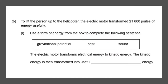Next question. To lift the person to the helicopter, the electric motor transformed 21,600 joules of energy usefully. Use a form of energy from the box to complete the following sentence. The electric motor transfers electrical energy to kinetic energy. The kinetic energy is then transferred into useful something energy. The helicopter is lifting the person up, so the person is going off the ground and is no longer on the floor. This means it's going to be transformed into gravitational potential energy, and that is useful as well. And that will give you one mark.